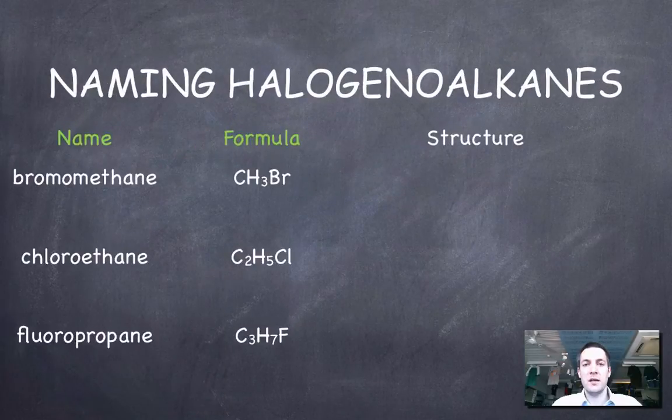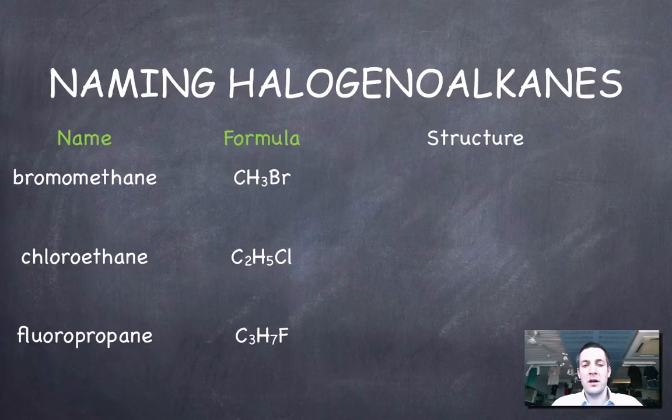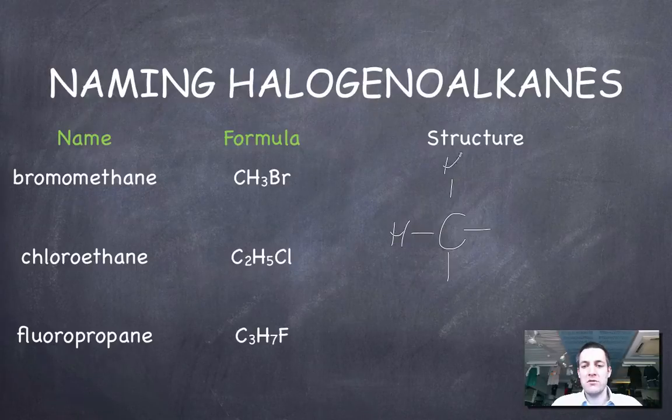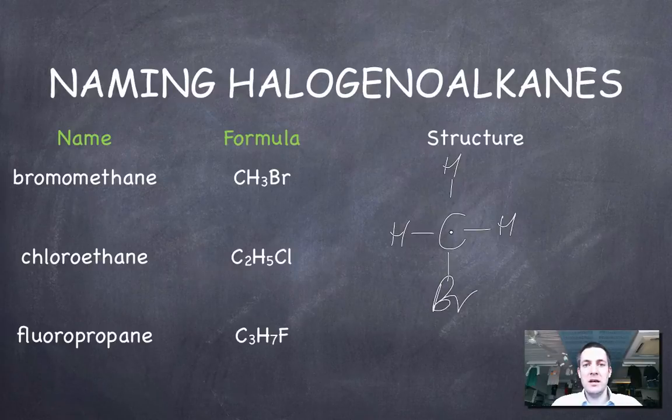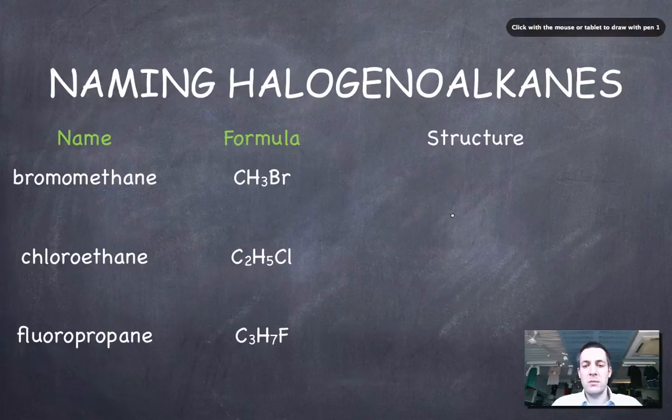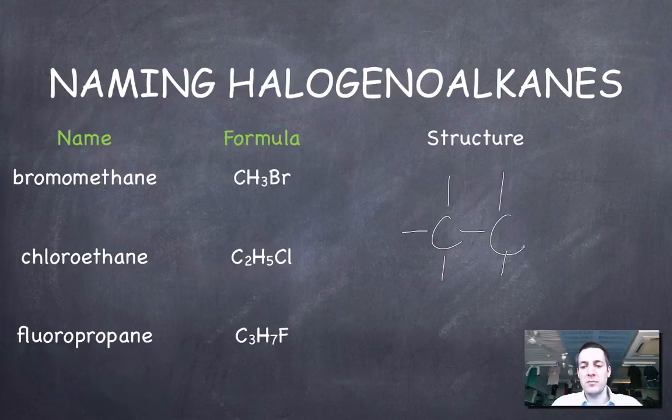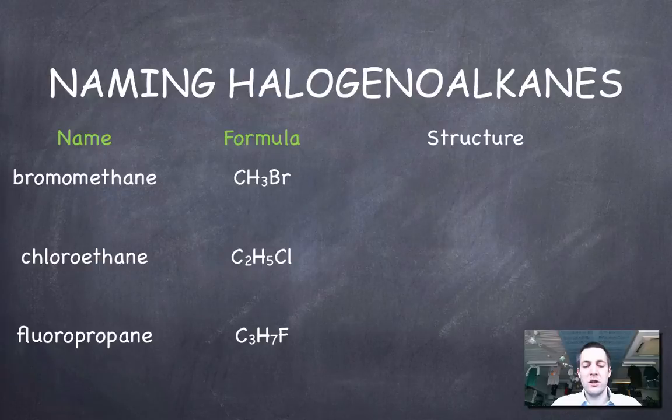Now as far as naming them goes, well you name them very much like the alkane that they are except that you mention that there is a halogen attached to them. So if we've got one carbon atom like here and we've got four bonds to a carbon, it doesn't matter which of these three I make hydrogens, but if one of them is a bromine then this is basically methane but it's got bromine attached so it's bromomethane. If I had two carbon atoms it would essentially be ethane and if I attached a chlorine to that somewhere, it doesn't matter where because they're all equivalent positions, I'd call it chloroethane, just like I'd call this last one here fluoropropane because it's got three carbons.